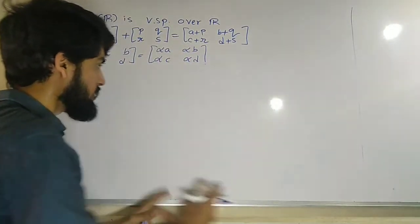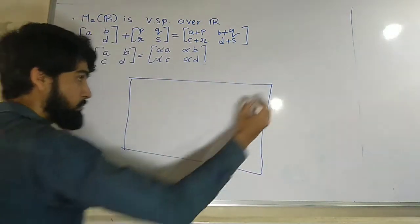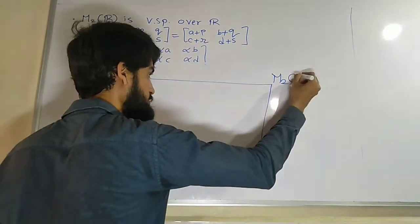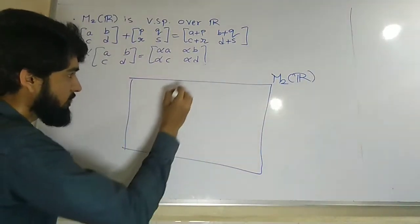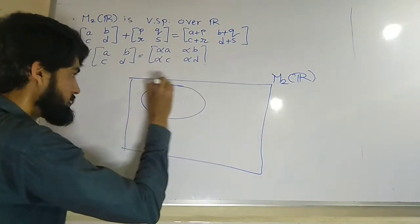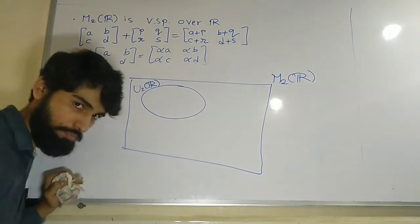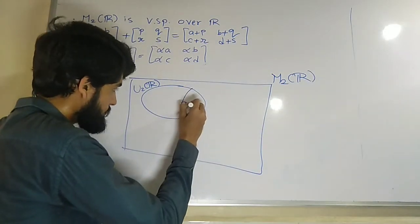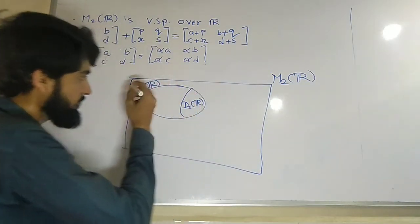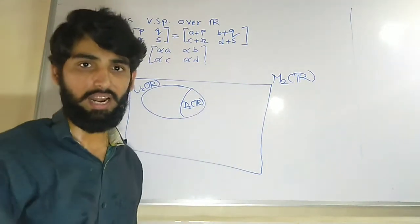So what we have learned is, suppose this is my M2R, my biggest space. Then in the fifth lecture we learned there is one subspace which is known as U2R, set of upper triangular matrices. Inside this, we can find some D2R, right? D2R is completely contained inside U2R.